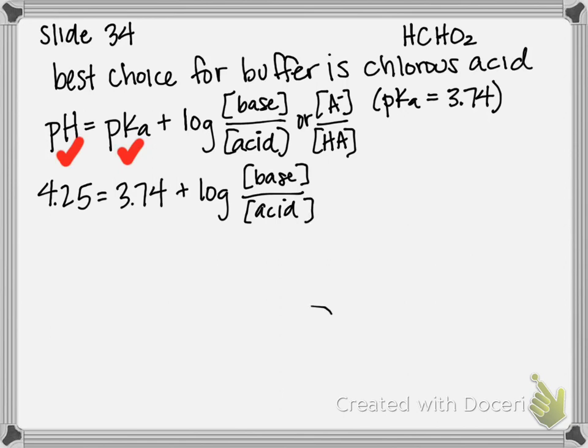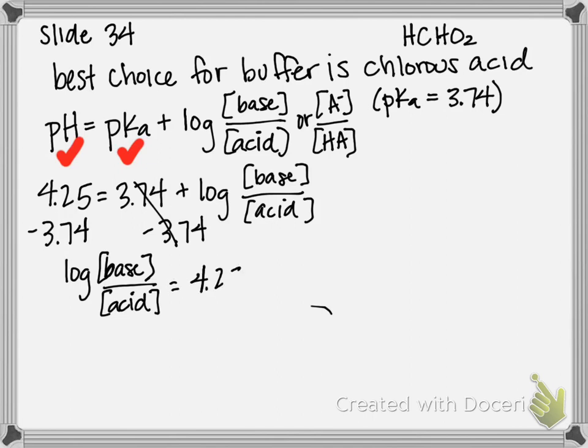We can subtract 3.74 from both sides and get log of our base over our acid equals 4.25 minus 3.74, which equals 0.51.